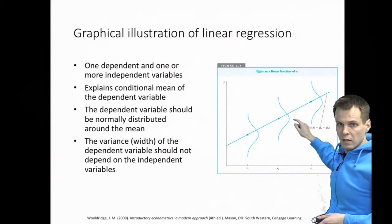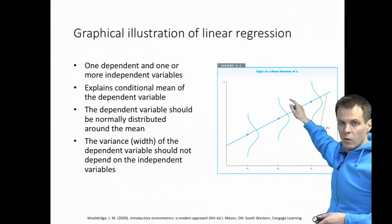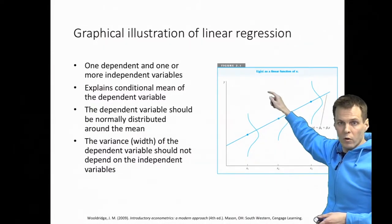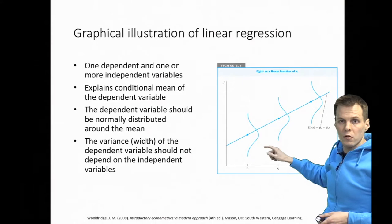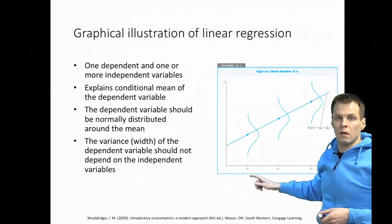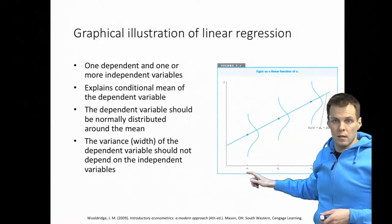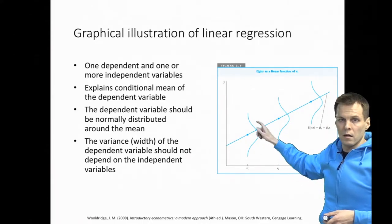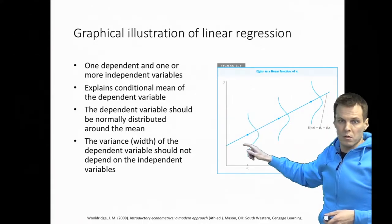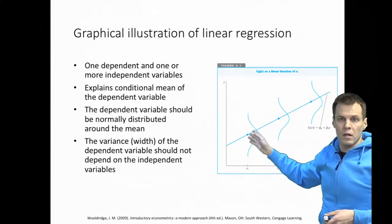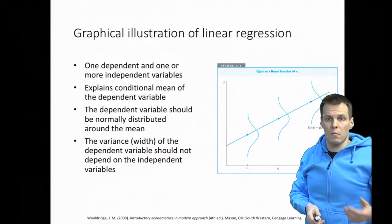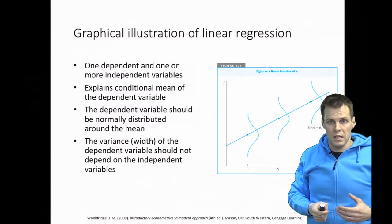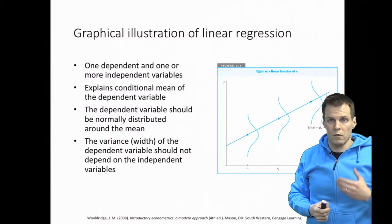Each individual observation falls somewhere around this line — some fall exactly on the line, some fall a bit further from it. We also assume that when we know x is 1, the values of y are normally distributed on the regression line. That's basically a summary of the assumptions, and now we'll take a look at specific parts of those assumptions.